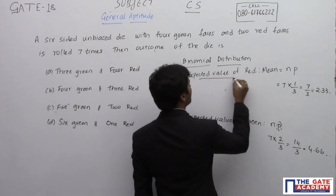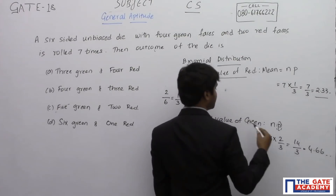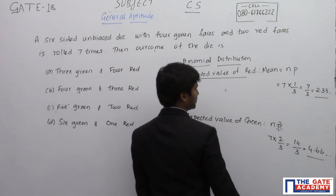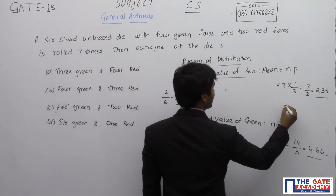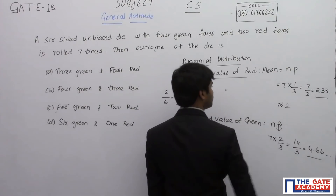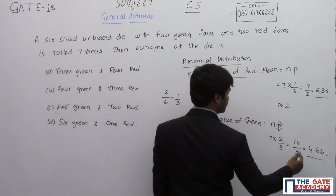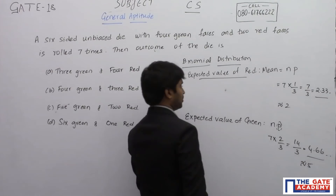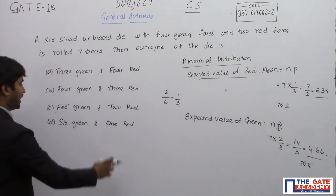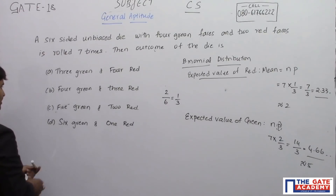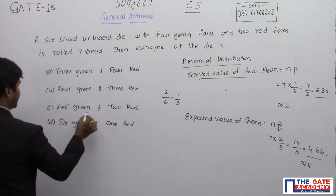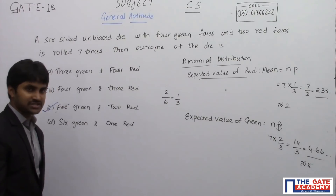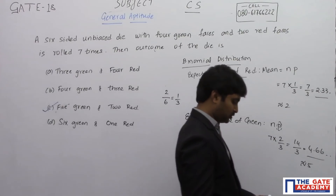So the expected value of red is 2.33 and the expected value of green is 4.67. To the nearest integer, red rounds to 2 and green rounds to 5. So we can expect two red and five green. Therefore the answer for this question is option C: five green and two red.